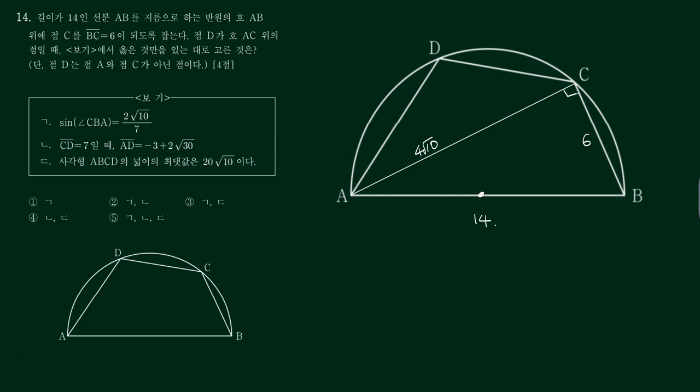그 다음에 sin의 CB 이 각은 14분의 4루트10 하니까 7분의 2루트10. 얘는 맞는 말이 되고, 그 다음 CD가 만약에 7이라면.